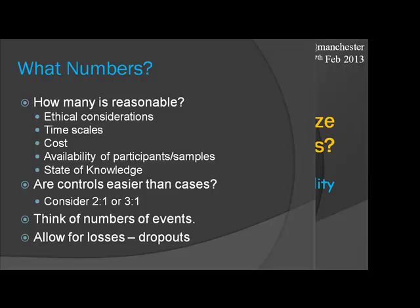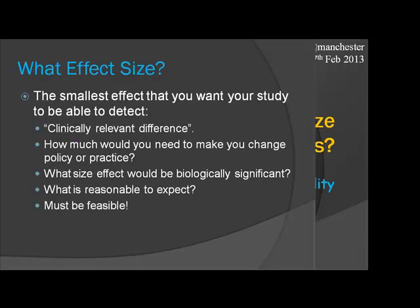Always think about the number of events. If you've got a binary outcome — a yes/no outcome — what drives the power is the number of people where the event happens, not the total number. So if only one in a hundred people have whatever outcome you're looking for, it's that one that matters, not the hundred. That drives the numbers. And always remember: in any study you don't end up with the same number at the end that you thought you were going to — so allow for dropouts.